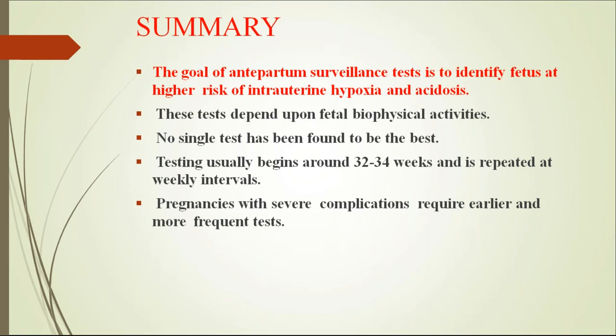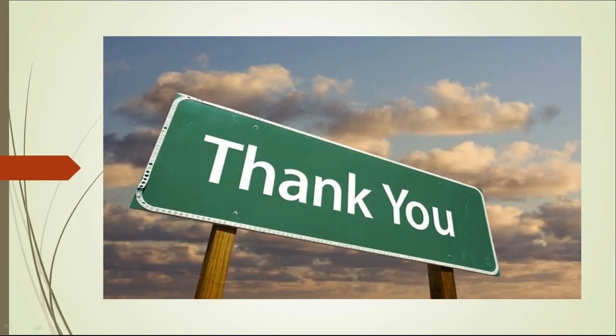In summary: the goal of antepartum fetal surveillance is to identify fetuses at risk of intrauterine hypoxia and acidosis. Tests depend upon biophysical activities of the fetus; no single test is best, so multiple tests are used together. Testing usually begins by 32 weeks of gestation, is repeated at weekly intervals for low-risk cases, and the frequency increases according to fetal and maternal complications.